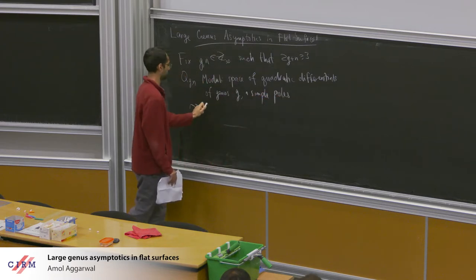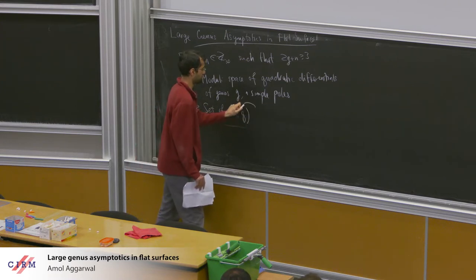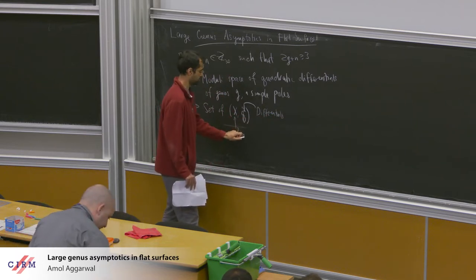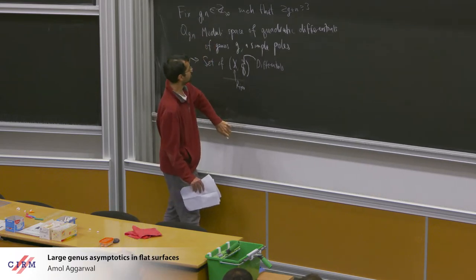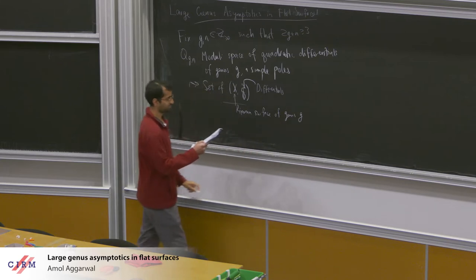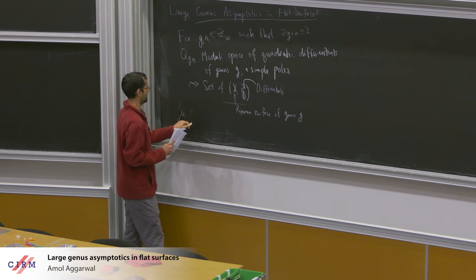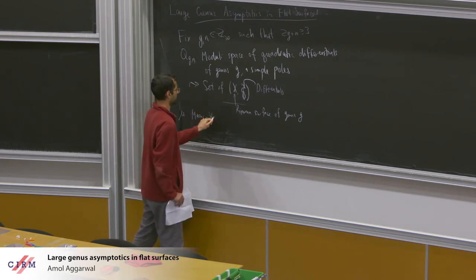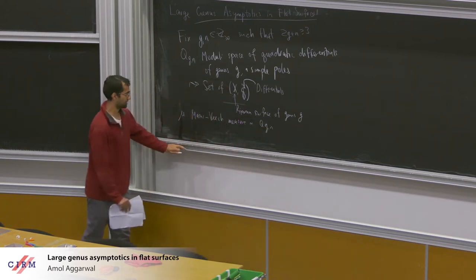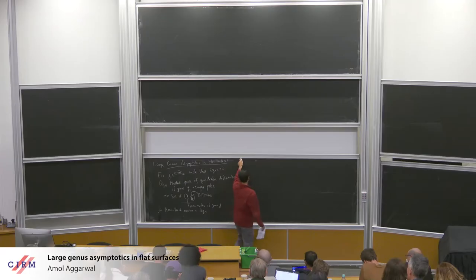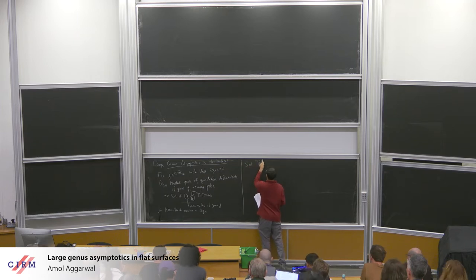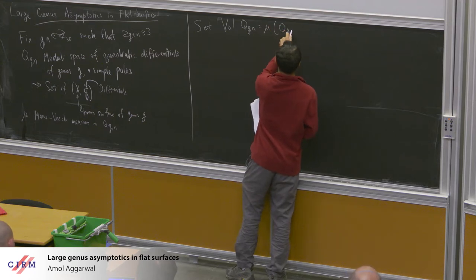These are the set of all pairs (X, q) where q is a quadratic differential with n simple poles and X is a surface of genus g. We'll let μ denote the measure on Q_{g,n} — essentially a Lebesgue measure on the set of periods — and we'll set vol(Q_{g,n}) to denote the volume of Q_{g,n} under this measure.